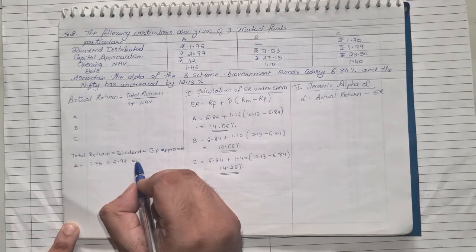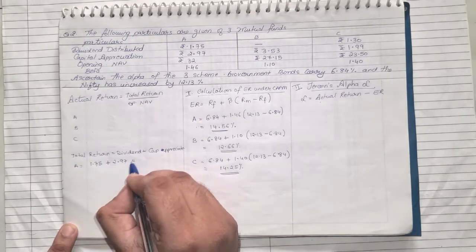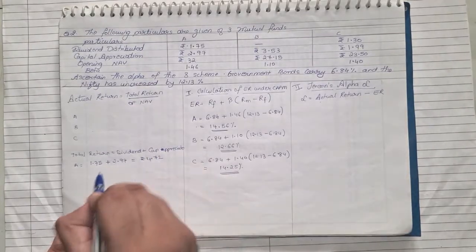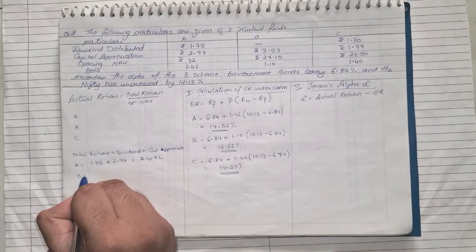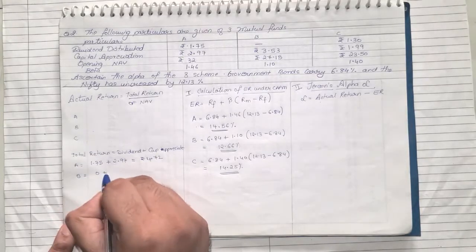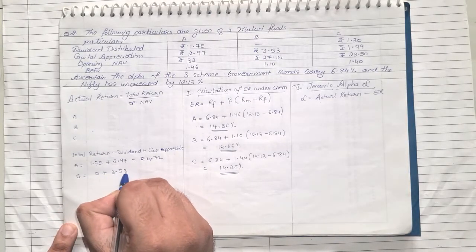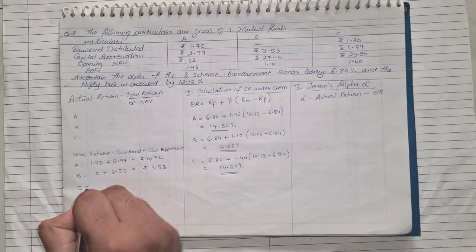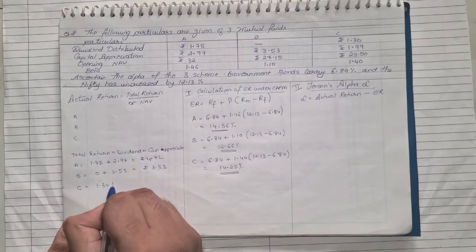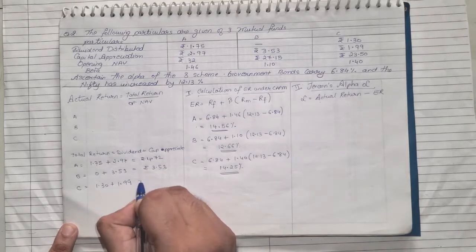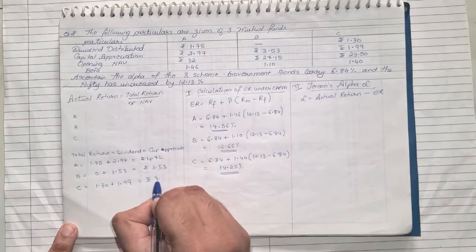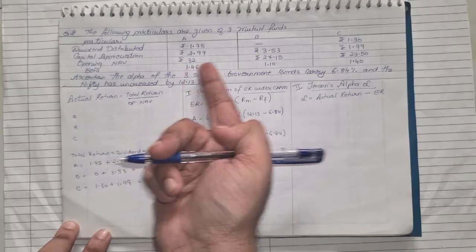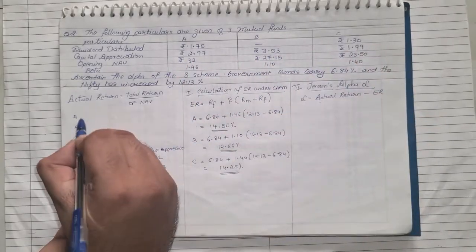Similarly for B, dividend is not available, so it will be 0 plus 3.53, so the value is the same, 3.53. For C it would be 1.30 plus 1.99, which comes to rupees 3.29.